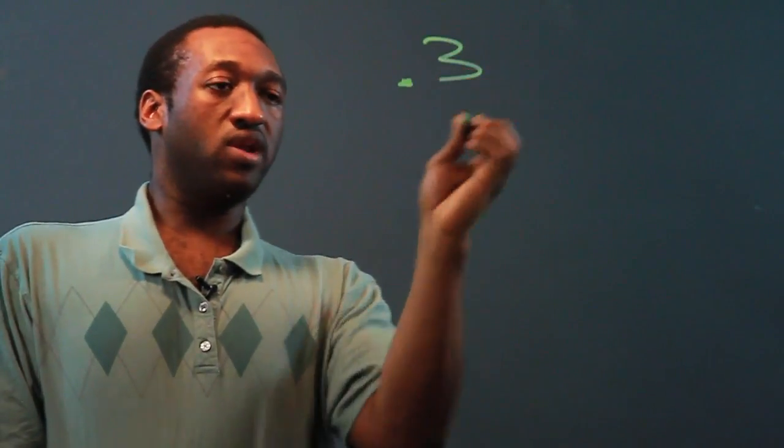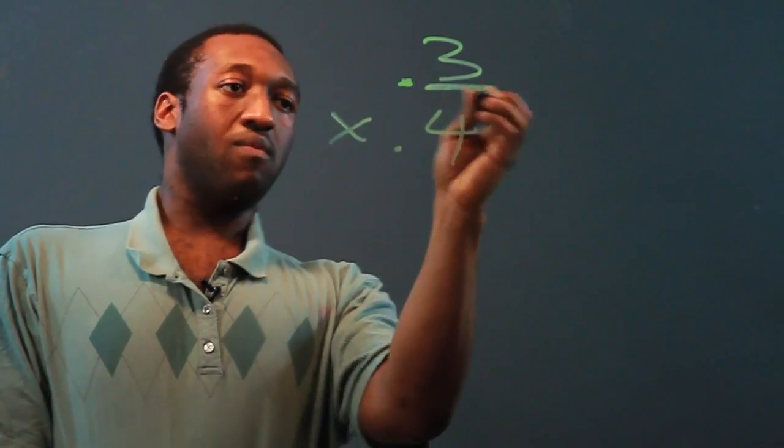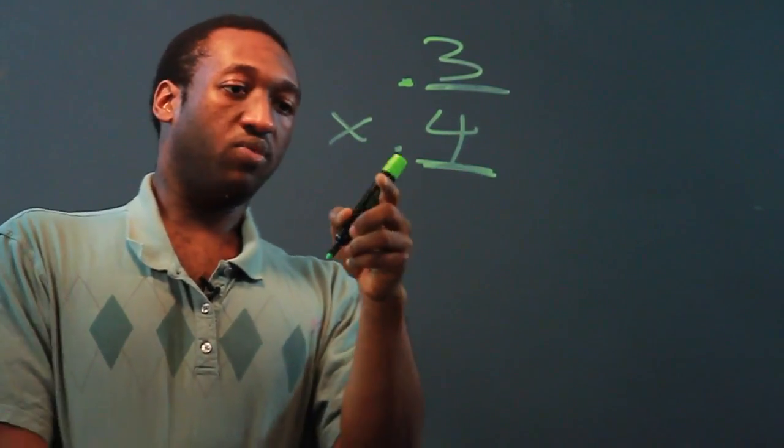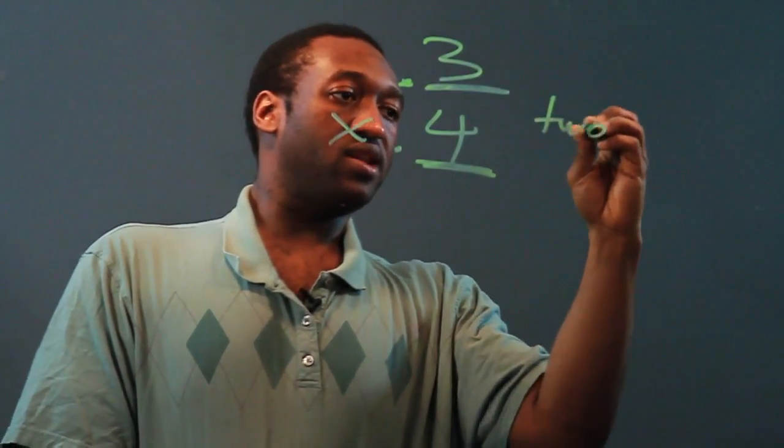So, let's say I wanted to do 0.3 times 0.4. Now, there's one number behind the decimal in 0.3, and also one number behind the decimal in 0.4. So, in our final answer, we should have two numbers behind the decimal.